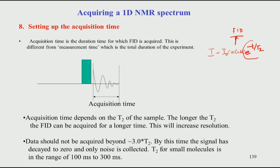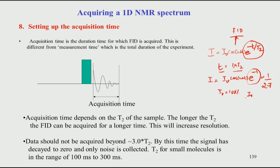Looking at this parameter: if T equals 1 times T2, then I equals I₀ times e to the power minus 1, which is 1 over e, or 1 over 2.7. That is about 33 percent. So if you consider I₀ as 100 percent, after one T2 the signal has decayed to about 33 percent.